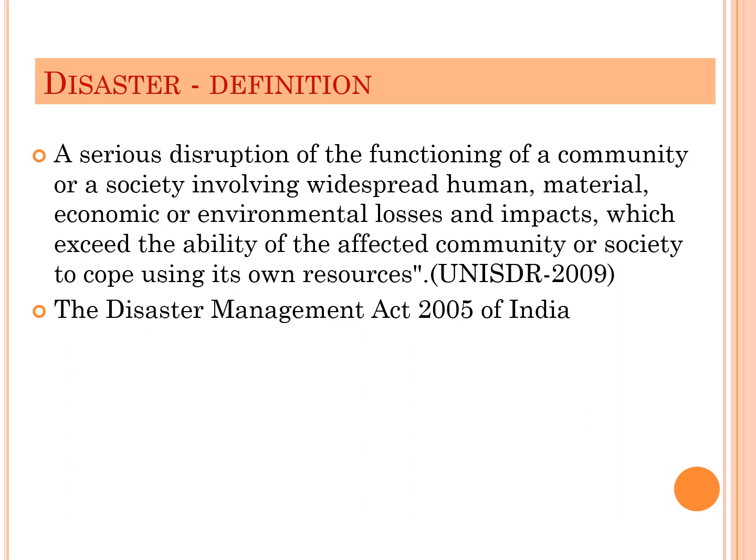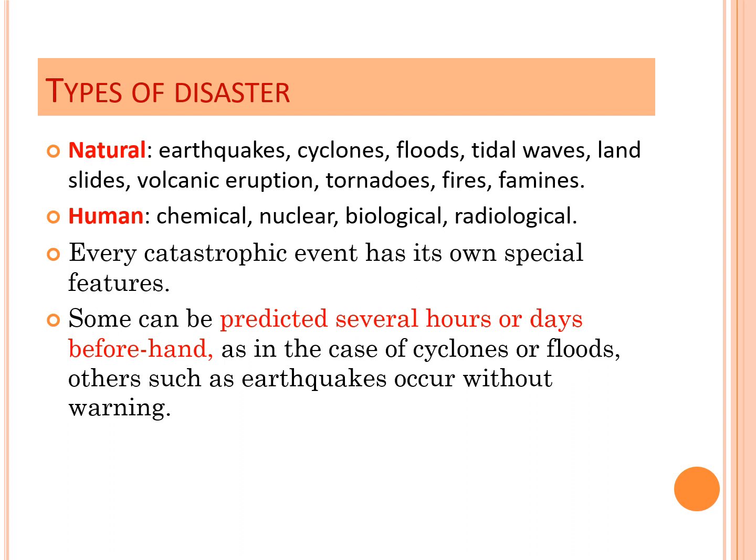There are two types of disaster: natural disaster and human-induced disaster. Examples of natural disasters in our country include floods — recently in 2018, Kerala faced a major flood — and earthquakes like the one in Gujarat. The Bhopal gas tragedy is an example of a human-induced disaster. These examples will be discussed in detail in later slides.